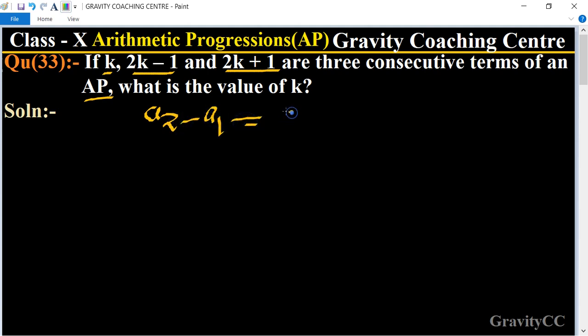equals third term minus first term. Now we put the value of the terms. Second term means 2k